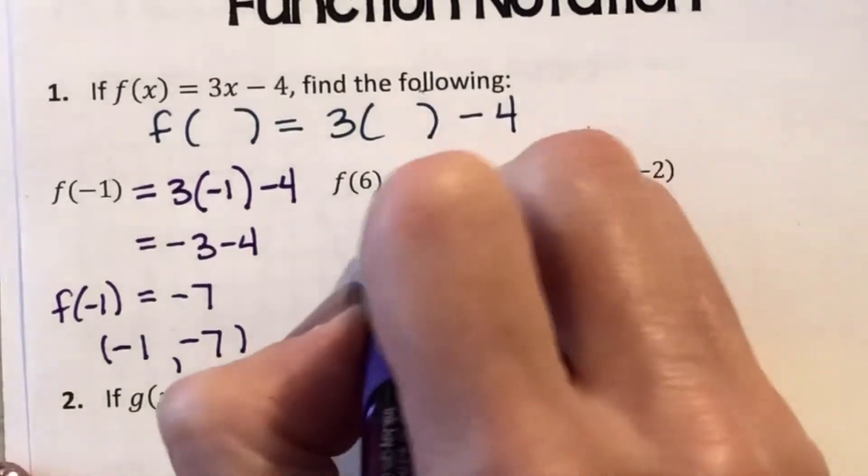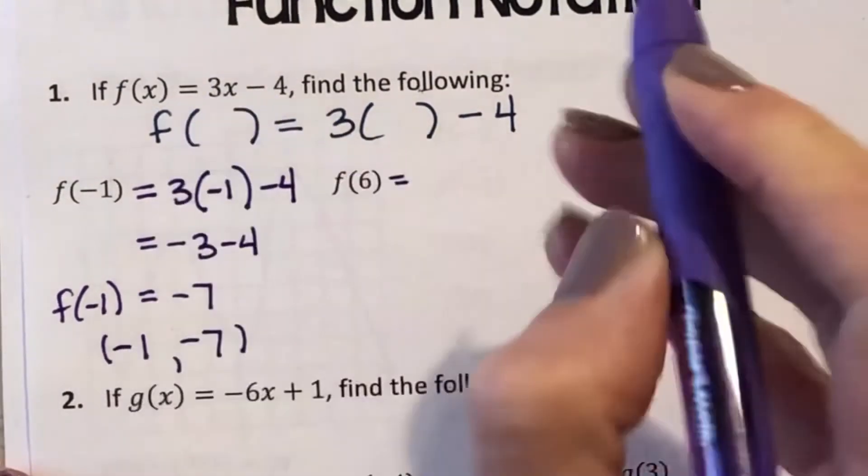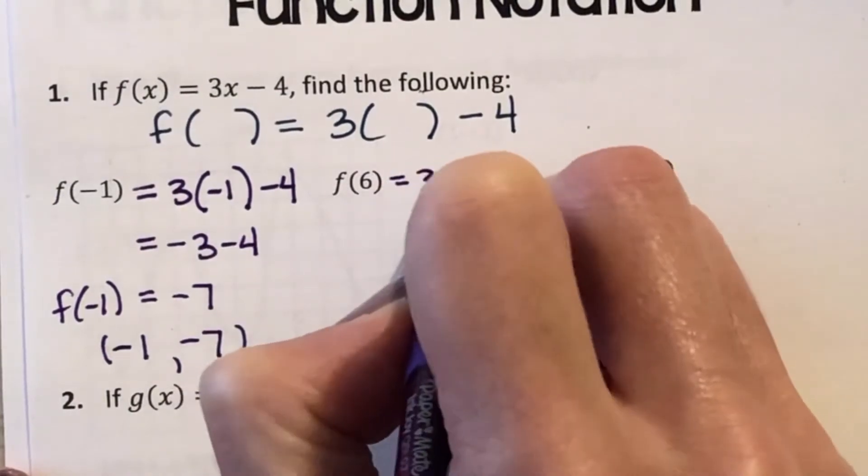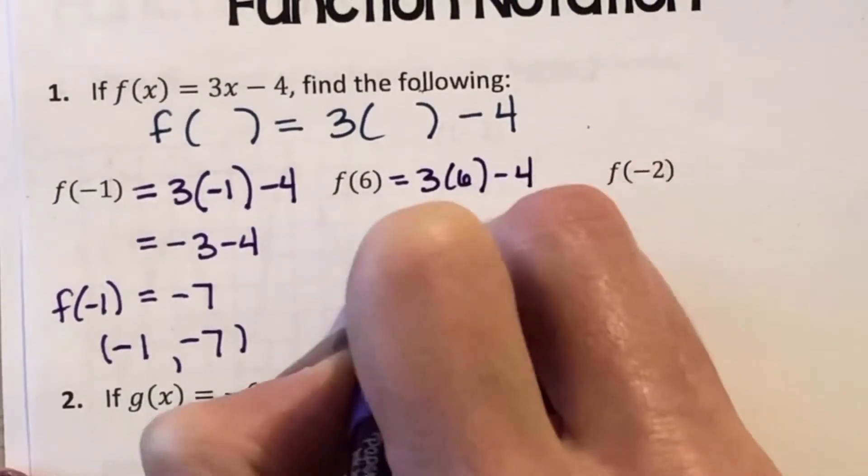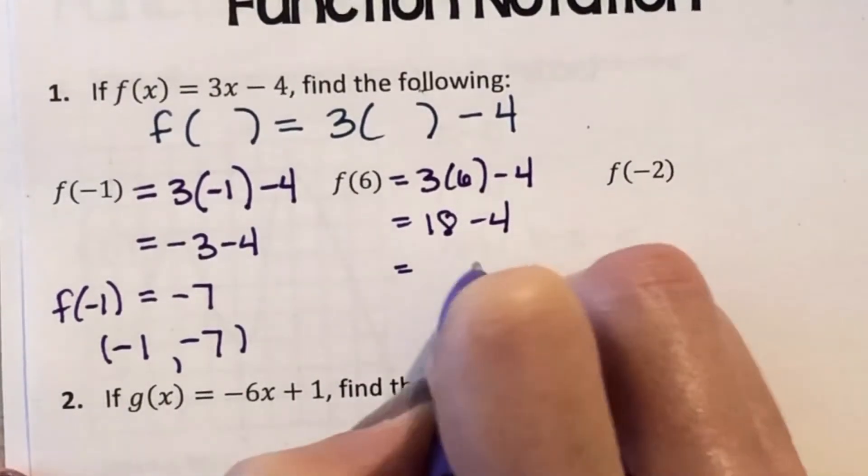Let's do f of 6. This means I'm plugging in 6 anytime I see an x. So 3 times 6 minus 4. 3 times 6 is 18 minus 4, and that is 14.